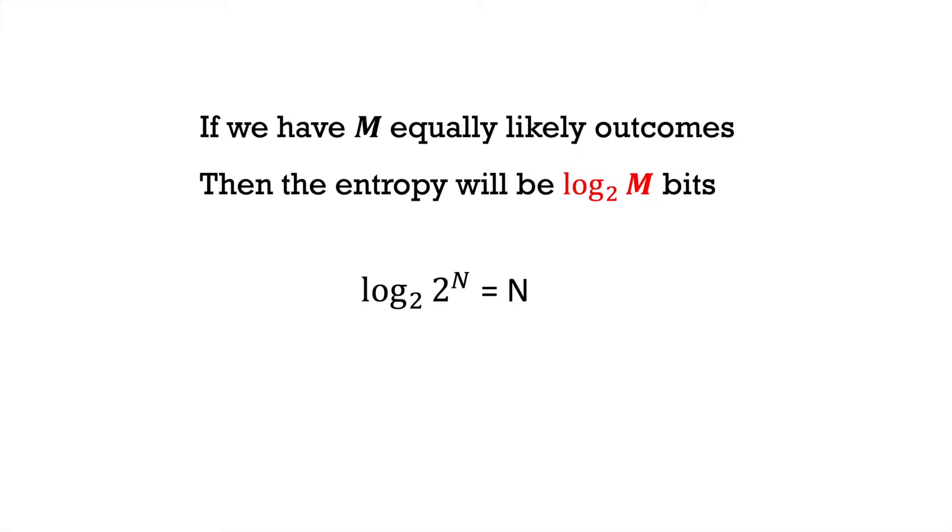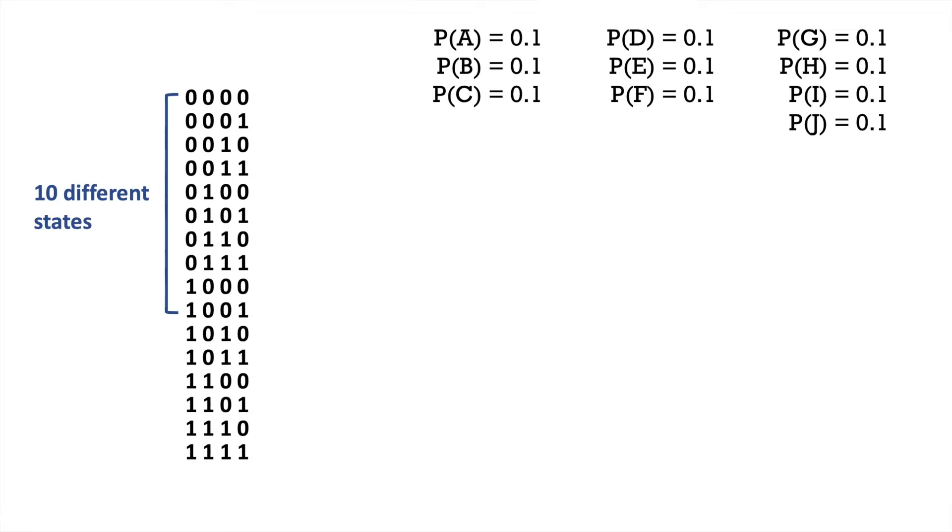Assume that we have a distribution with 10 equally likely outcomes. 4 bits give 16 unique states, so we could in theory use 4 bits to encode every possible outcome. However, this is inefficient as it leaves 6 states left over. To do better, we can observe 3 separate outcomes and encode the outcomes in groups of 3.